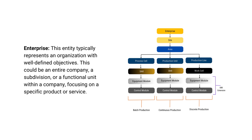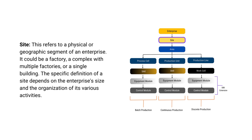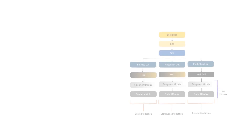The enterprise: this entity typically represents an organization with well-defined objectives. This could be an entire company, a subdivision, or a functional unit within a company focusing on a specific product or service. The site: this refers to a physical or geographic segment of an enterprise. It could be a factory, a complex with multiple factories, or a single building. The specific definition of a site depends on the enterprise size and the organization of its various activities. The area: this is a physical, geographical, or logical grouping within a site.